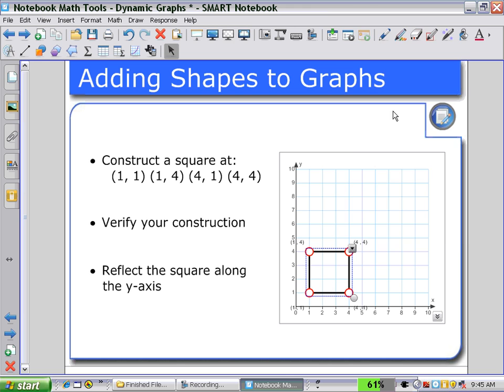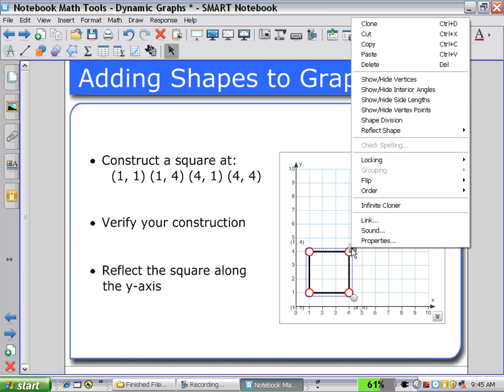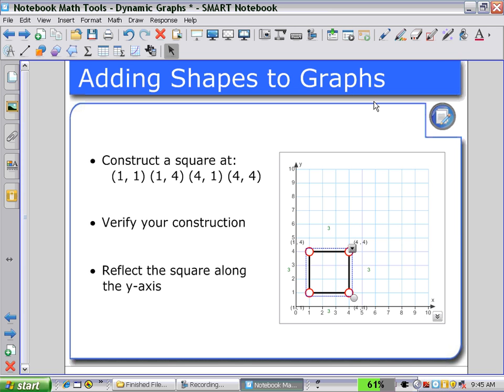Next, just to check again, we can show the side lengths to see that each of the side lengths are three units in length. Once we've verified that we have the square at those points,